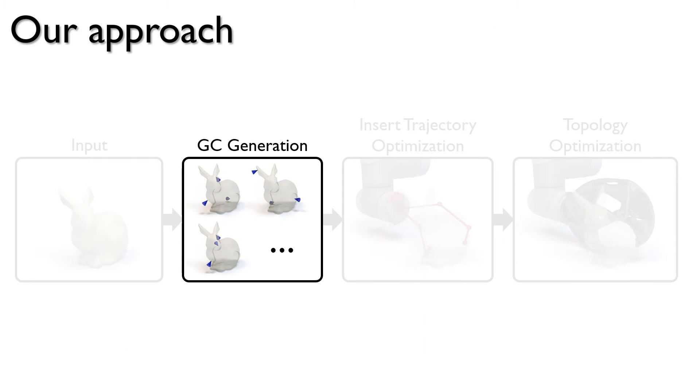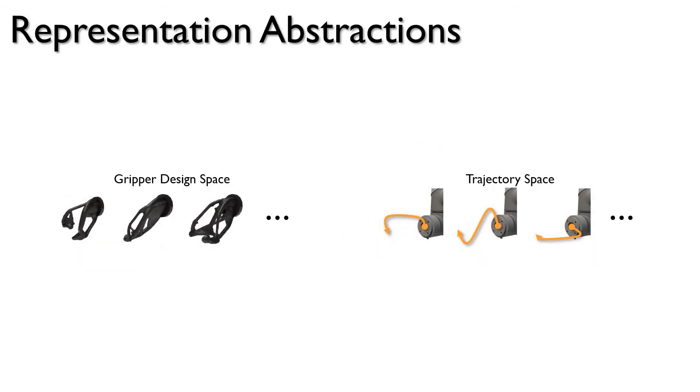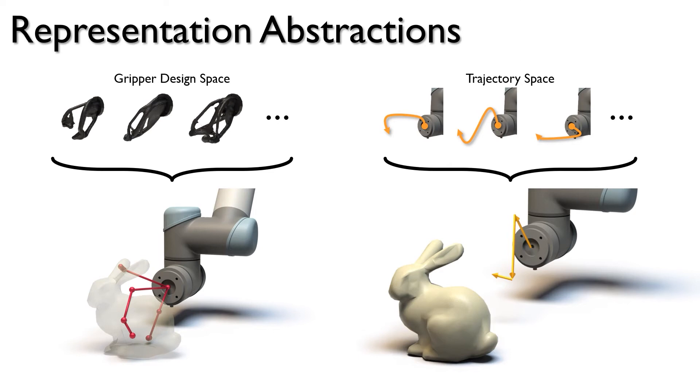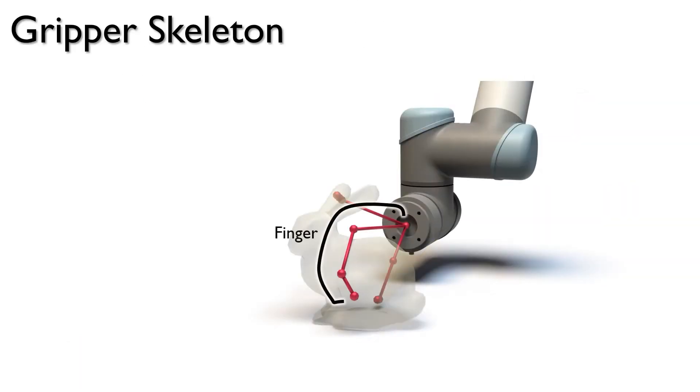Having generated a ranked list of GCs, we now proceed to find the insert trajectory for the best ranked GC. In this stage, we co-optimize the gripper design and the insert trajectory to avoid collision. While co-designing is typically a challenging problem because of the large search space, we reduce it to an optimization over a low-dimensional space of parameters. Our gripper design abstraction or skeleton contains three fingers connecting the robot arm with each of the contact points. Each finger is represented as a piecewise linear segment connecting the joints.